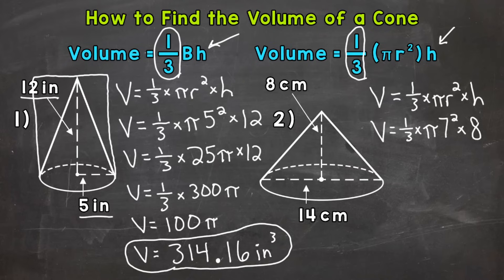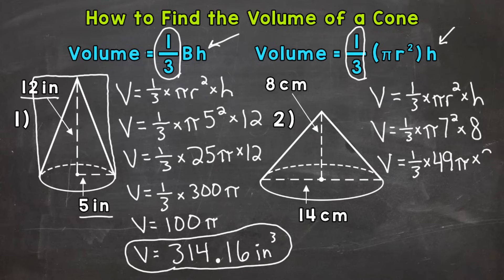Now we're ready to simplify this and break it down until we get our final volume. So next we'll do 7 squared. Volume equals 1/3 — well, 7 squared means 7 times 7, which gives us 49. So we have 49π. That's the area of the base in terms of pi. Then we multiply by the height of 8. Our next step is going to be 49 times 8. We don't have anything compatible with that 1/3 that we can cross-cancel, so 49 times 8 is our best option.